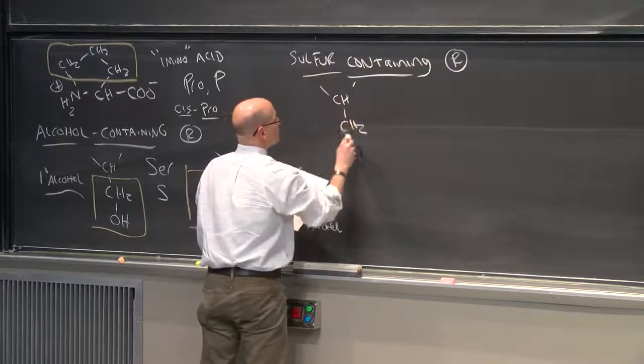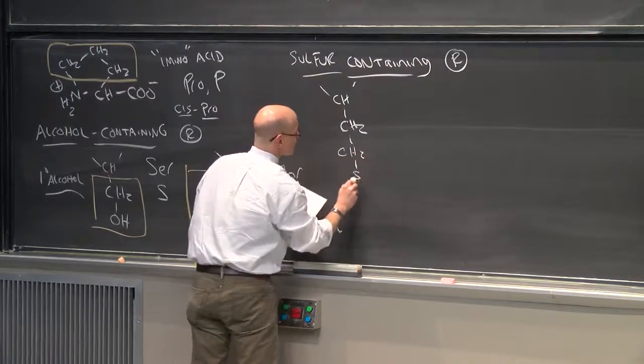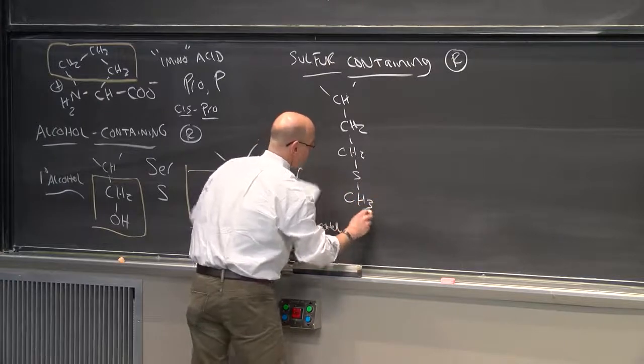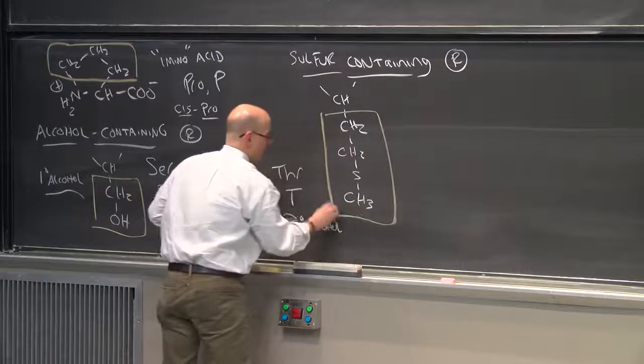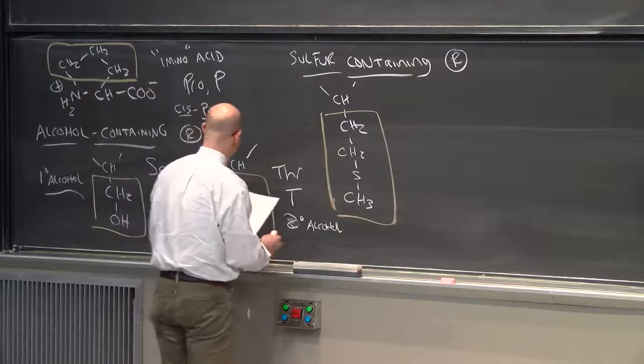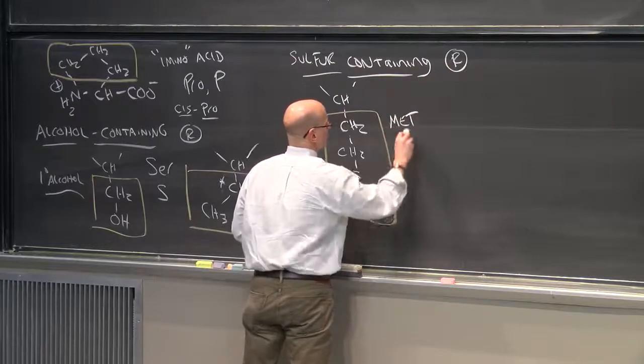CH2, this one, CH2, CH2, S, CH3. This is my side chain. This one is called methionine, M-E-T, single letter code M.